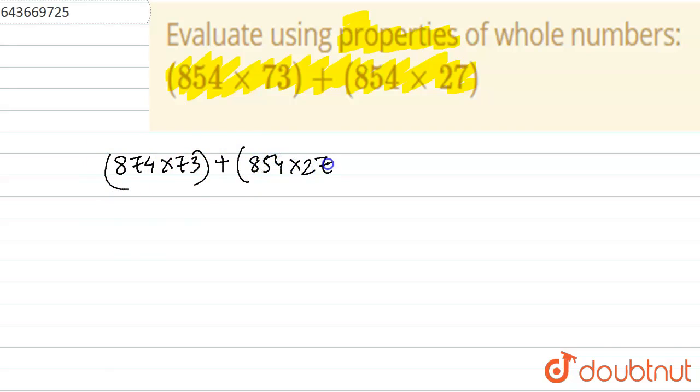I can use here the distributive property. Distributive property says that we have 854 into bracket of 73 plus 27.